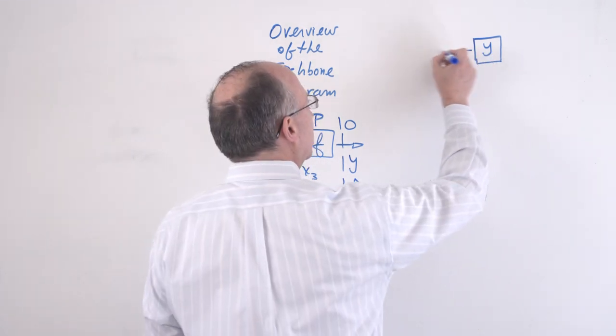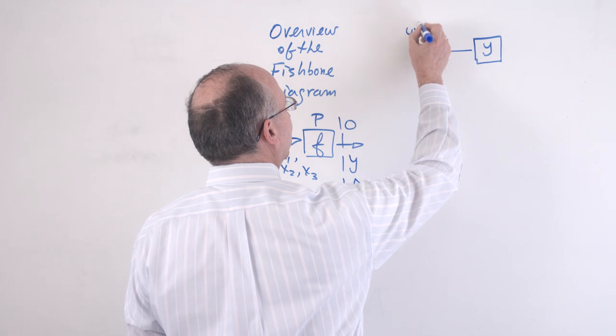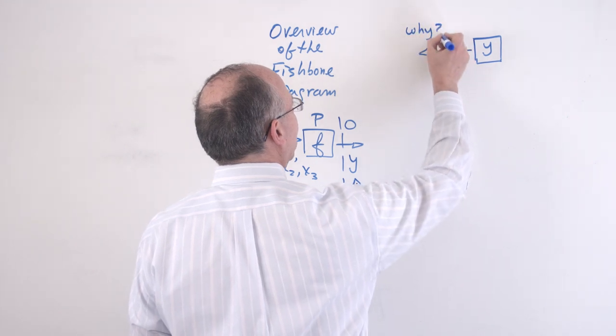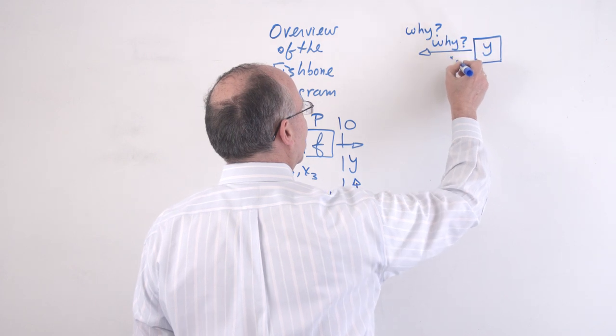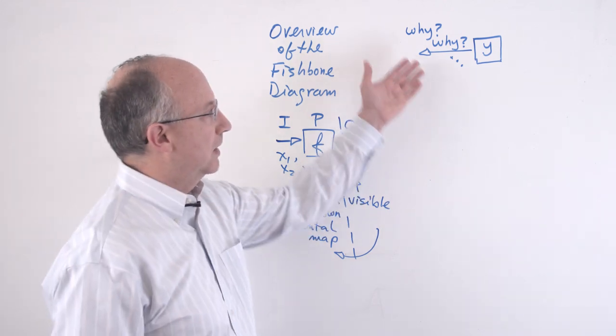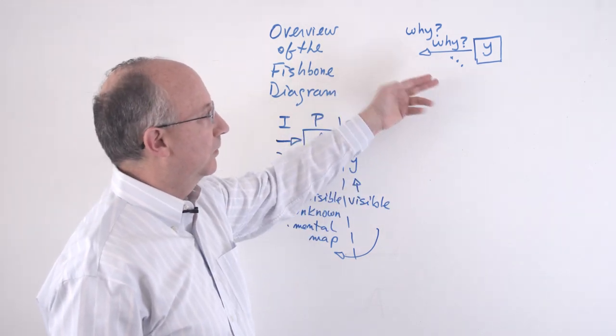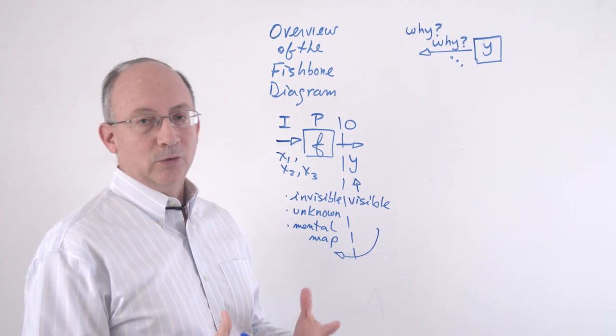And the way to uncover, to kind of pull the curtain behind this, is by asking the question of why is this the case, and then why is this the case. And like this a number of times. There's even a tool known as the five whys, which basically tells us that we need to ask why something is happening numerous times in order to actually find the true causes.